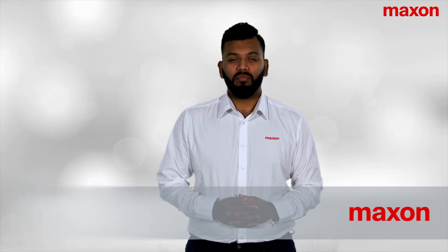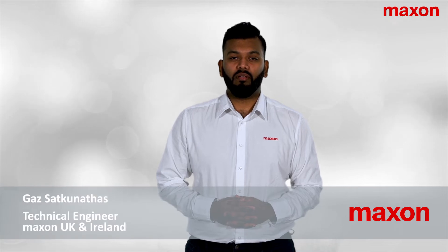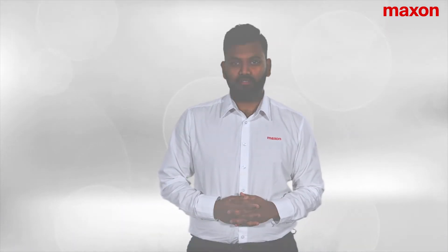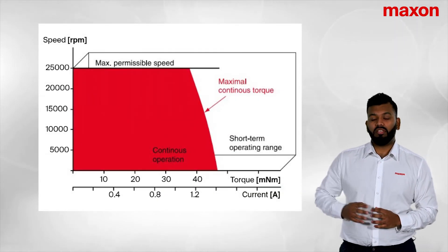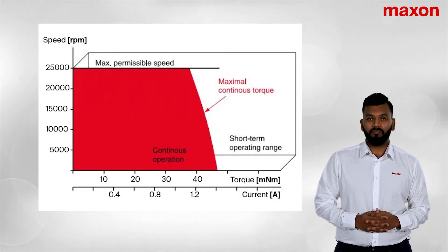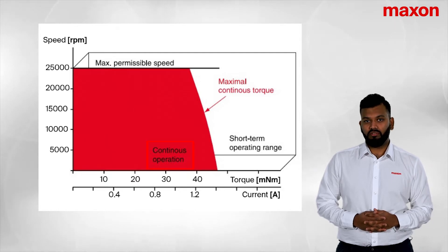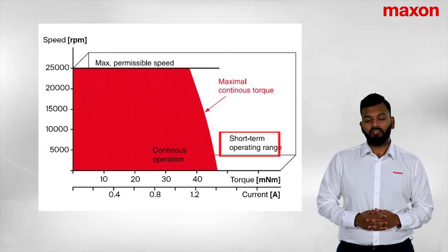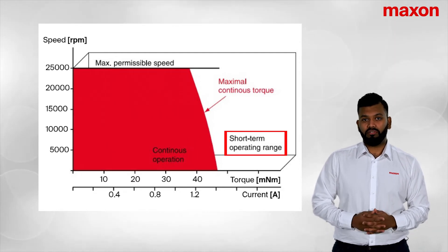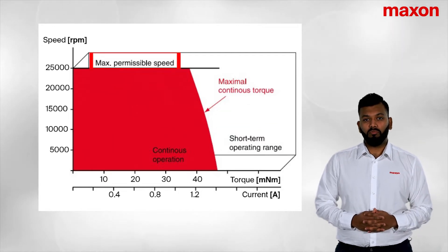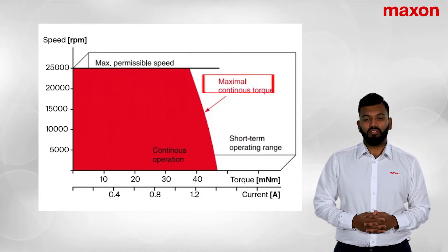Hi, my name is Gaz, I'm a technical engineer here at Maxon UK and Ireland. In today's video we'll be looking at thermal operating ranges. To my right you can see a typical operating range diagram. On that diagram, the red shaded area is the continuous operating range, to the right of that is the short-term operating range. You can also see the max permissible speed and the continuous torque.